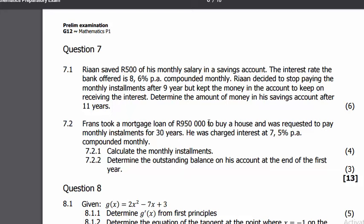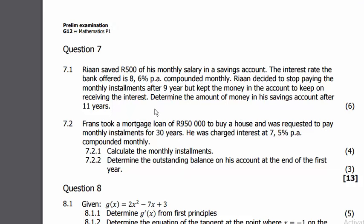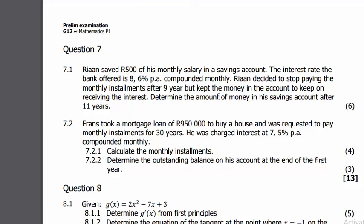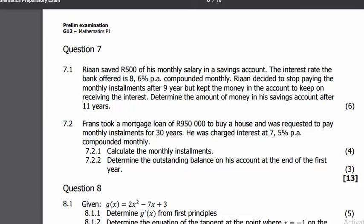Let's see how the financial maths went. Ryan saved 500 rand of his monthly salary into a savings account. The interest rate the bank offers is 8.6 percent. Ryan decided to stop paying the monthly installments after nine years, keeps the money in the account after receiving the interest. Determine the amount of money in the savings account.